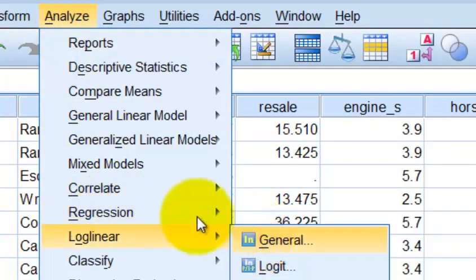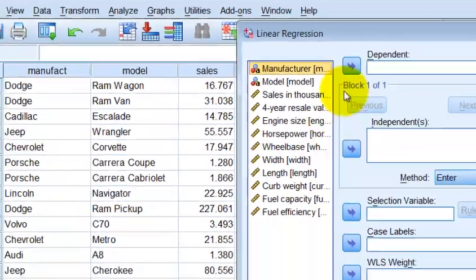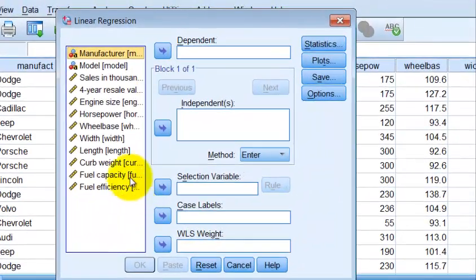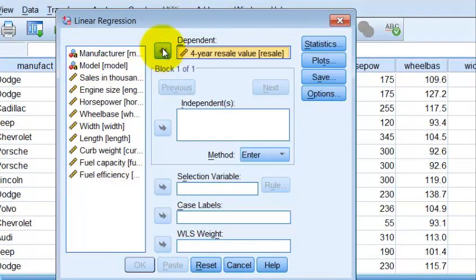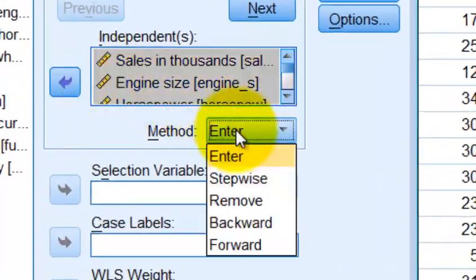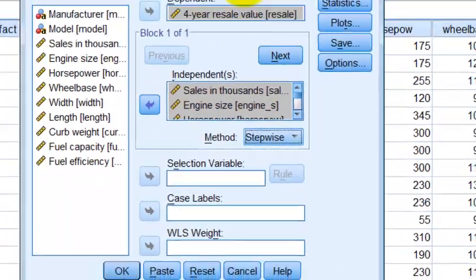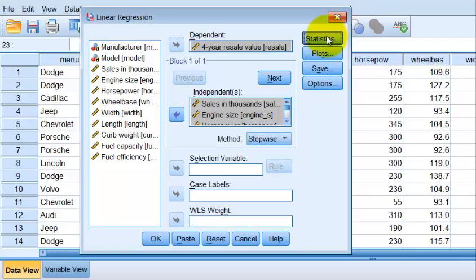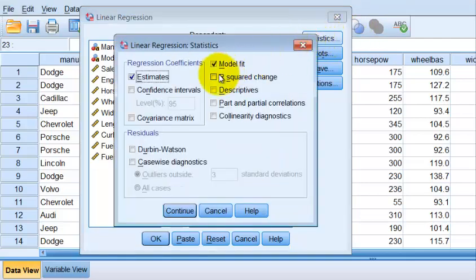Regression linear. And our DV was resale, four-year resale value. And then we're going to stick in all the other IVs. At the same time, we're going to choose stepwise. And to check our assumptions, we go to descriptives, parts and partials, collinearity, Durbin-Watson, continue.